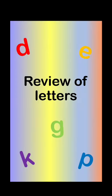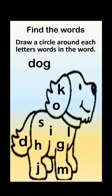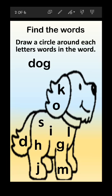Earlier today in English unit we have done the review of letters. Now let's find the words - draw a circle around each letter of the word inside the picture. The word we are having is 'dog', so we have to find the word dog inside the picture.